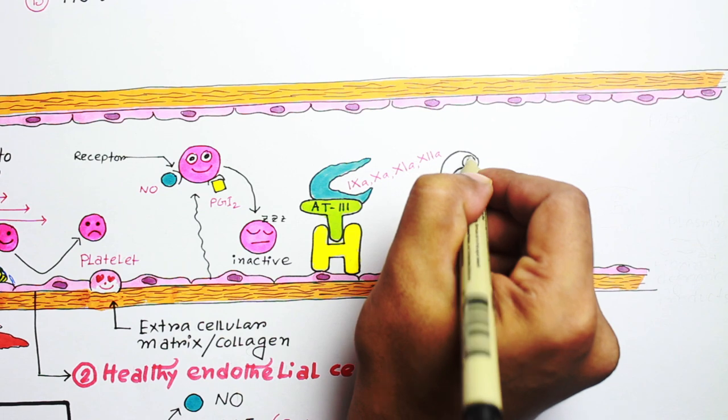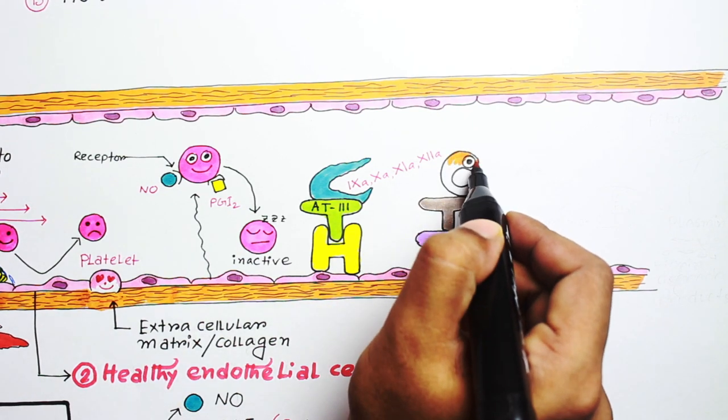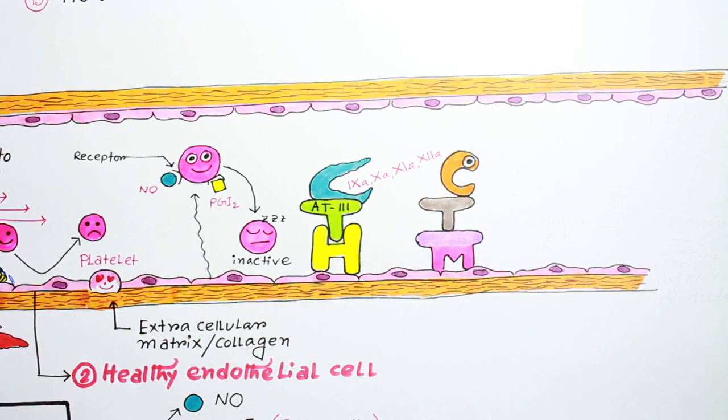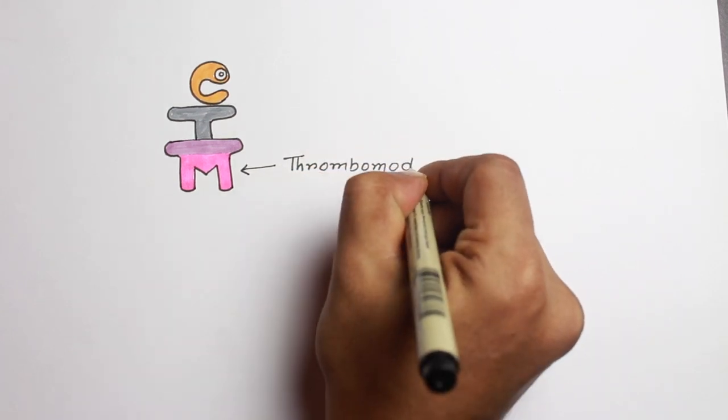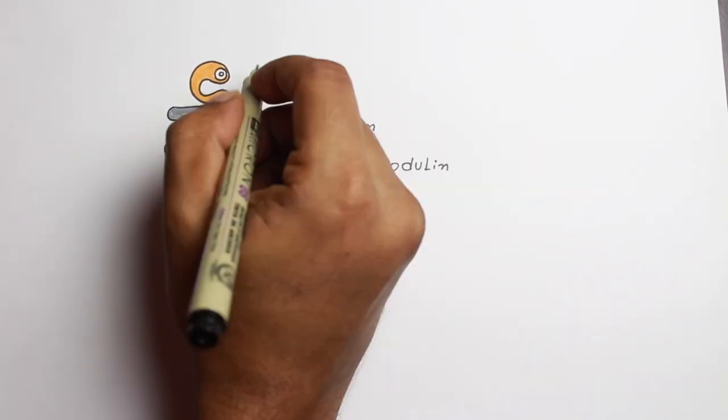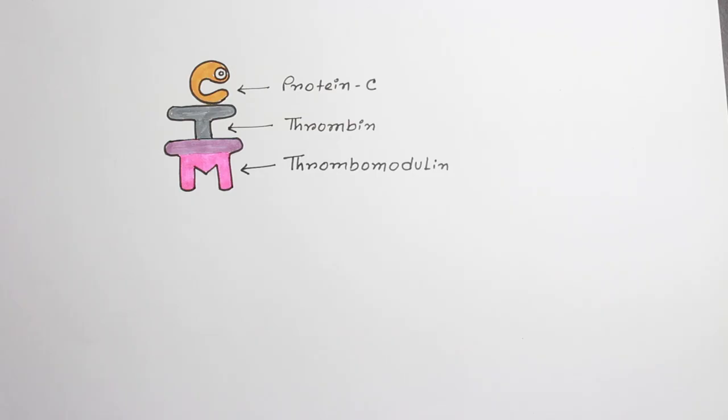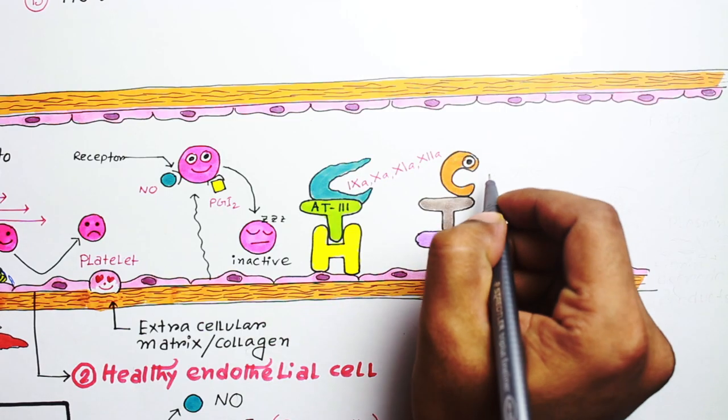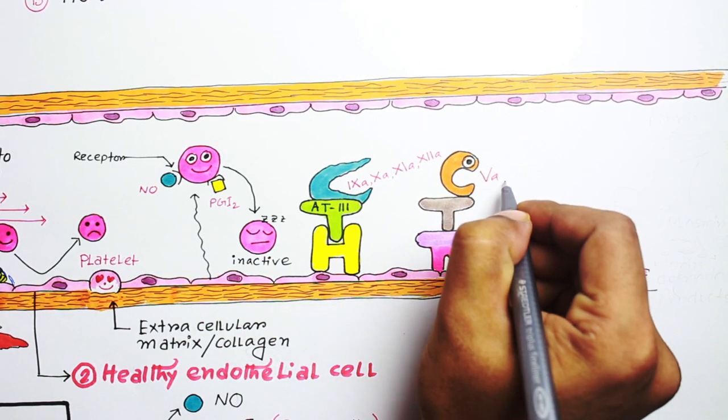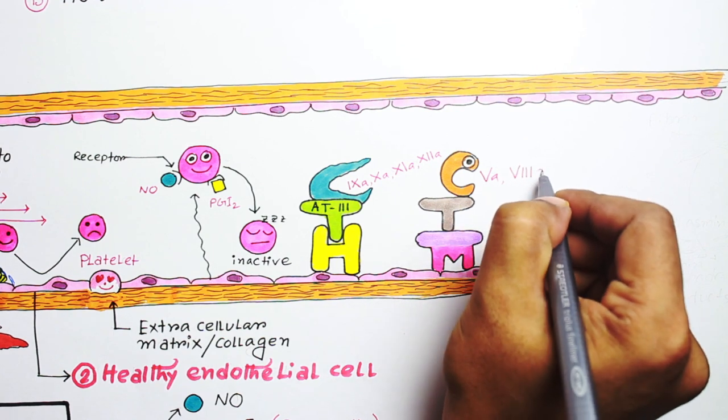Now, as soon as thrombin is modulated, it will activate protein C. Here, this is thrombomodulin, above it is thrombin, and finally protein C. Then activated protein C will digest or deactivate activated factor 5 and factor 8.